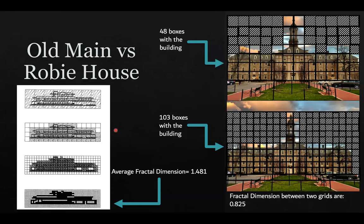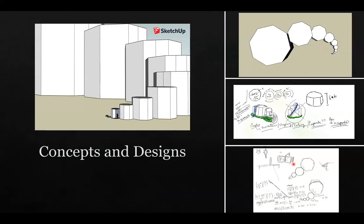Here is an example I did with Penn State's Old Main building, and on the left is a famous house called the Roby House. I used a 12 by 6 grid and filled in all the boxes where there are open spaces without the building enclosed in them, counting about 48 boxes. Then I doubled the grid to 24 by 12 and counted 103 boxes. Using the equation, I got a fractal dimension of 0.825 for Old Main — much lower than the Roby House's fractal dimension of 1.481. This tells me Old Main does not have much detail at the distance I'm standing, though this would change as I approached closer, where more detail would appear and the average ratio would increase.